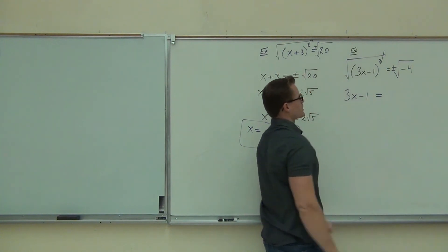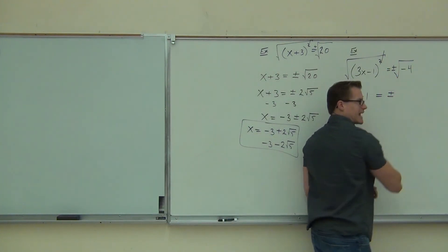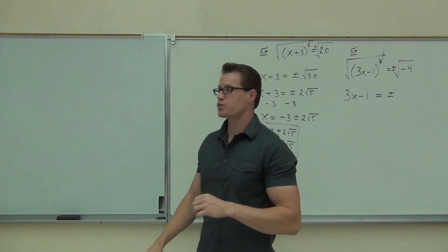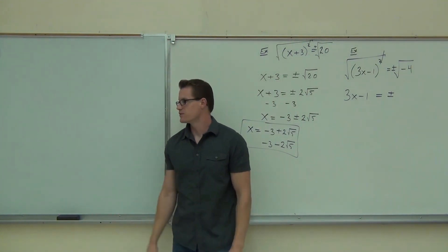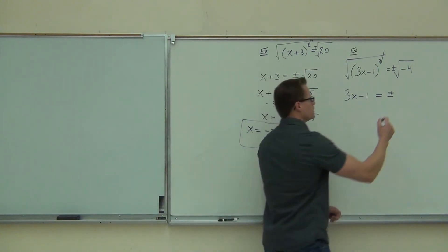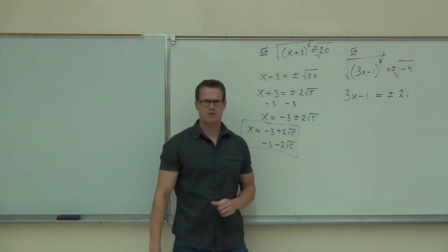So we're going to get 3x minus 1, that's not an issue. On the right-hand side, you're still going to have a plus or minus. You cannot forget about that. What's the square root of negative 4, please? 2i. Negative gives you i. Square root of 4 is 2. 2i. You okay with the 2i?